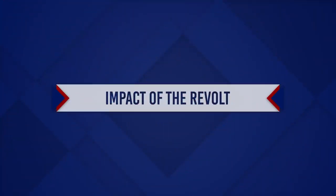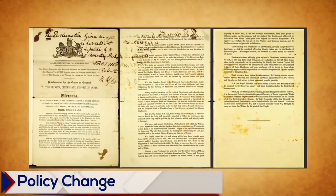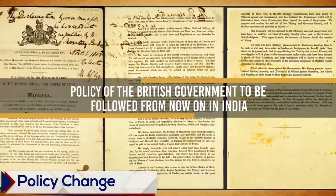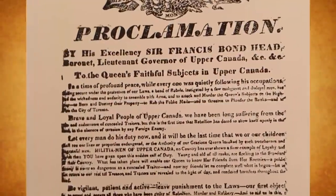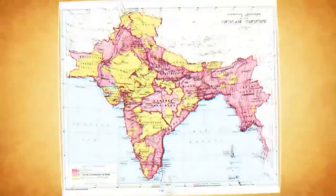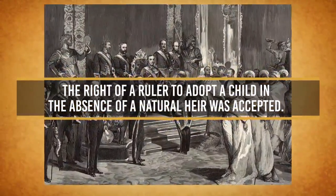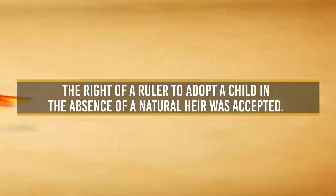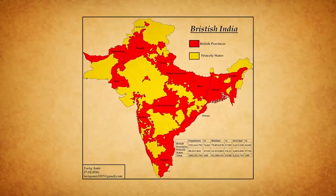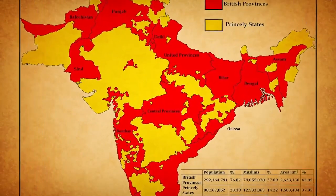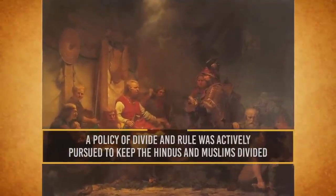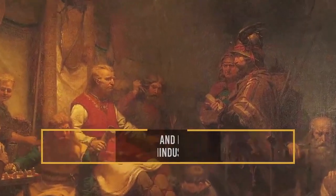Impacts of the Revolt. Policy Change: The Queen's Proclamation of November 1858 announced the policy of the British government to be followed in India. It announced that the policy of territorial extension was to be abandoned. The native rulers were assured of the safety of their territory, rights, and honour if they cooperated with the British. The right of a ruler to adopt a child in the absence of a natural heir was accepted. The government regarded native rulers as a bulwark against the masses and followed a policy of protecting this reactionary segment of Indian society. A policy of divide and rule was actively pursued to keep Hindus and Muslims divided.